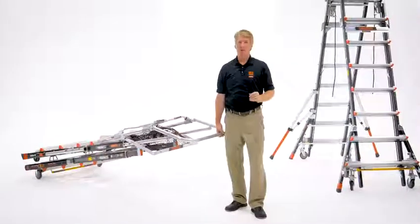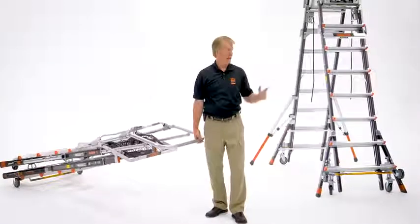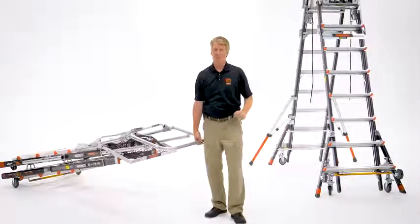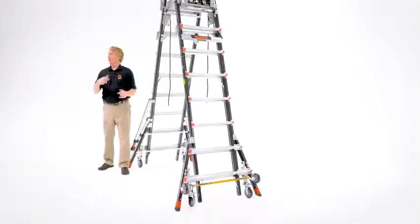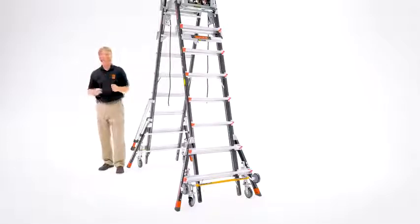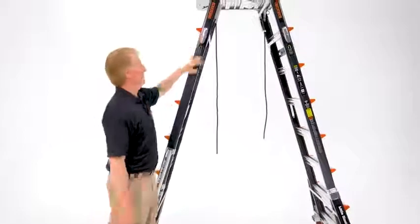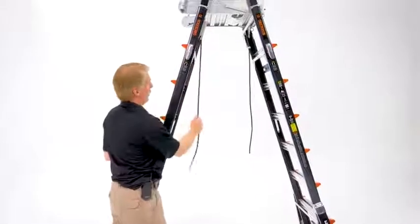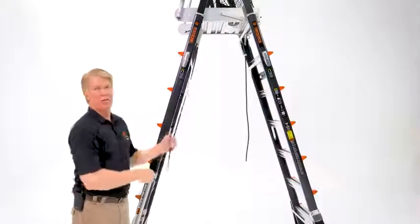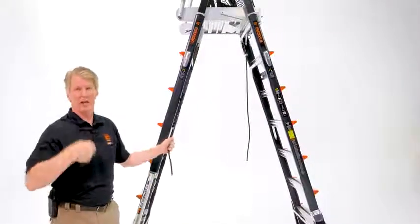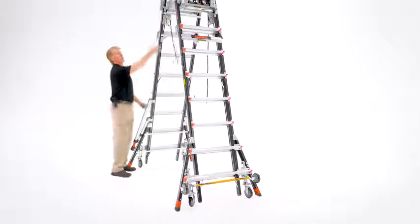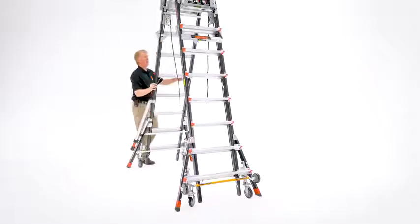The bigger 8 to 14 operates just a little bit differently. So we're going to want to take a moment to show the differences. On the larger 8 to 14 foot cage, it operates just a little bit differently. We still have the rock locks, but we also have a rope pulley device that's similar to an extension ladder.